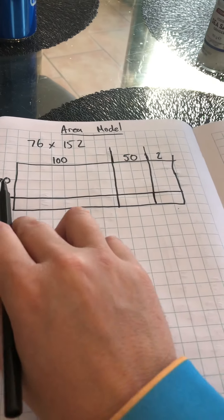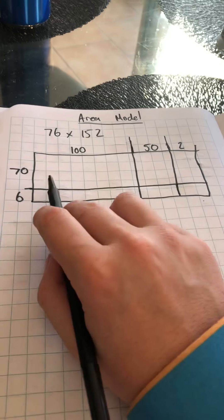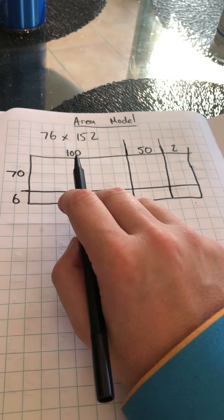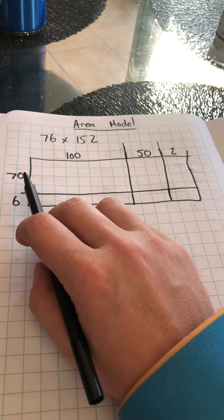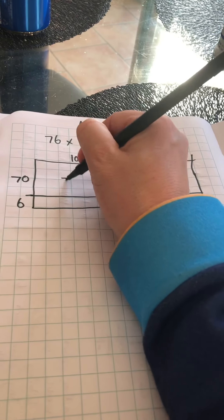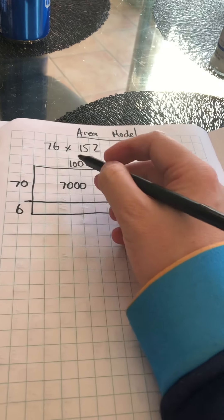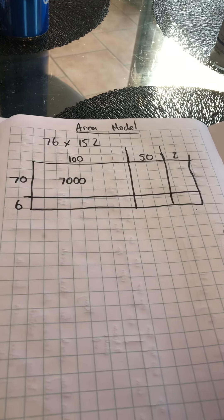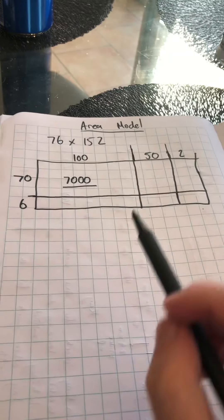Now what I'm going to do is use these nice round numbers to help me do some multiplication. I'm going to start here in the large box. I know that 7 times 100 is 700, so if I've got 70 and I've got an extra zero, that means the answer is going to be 7,000. I've got 7,000 worth in that part there.